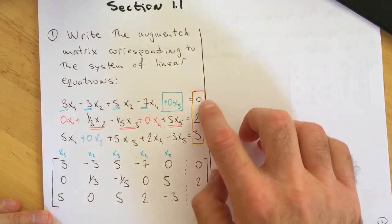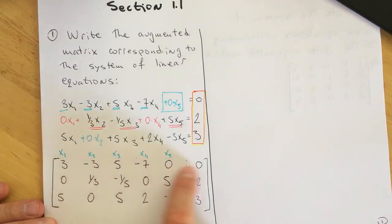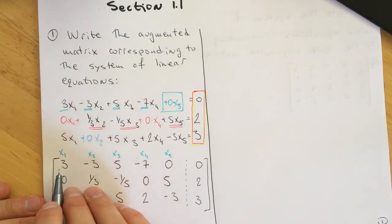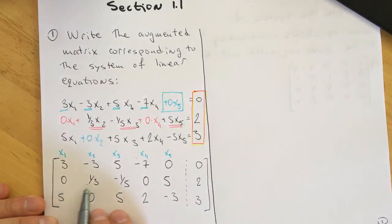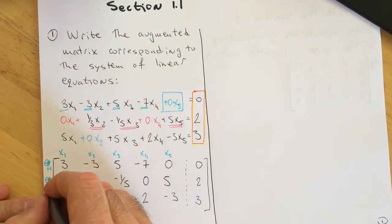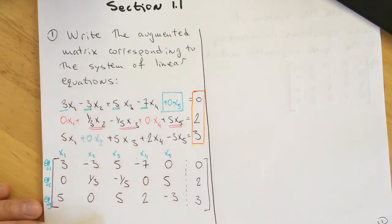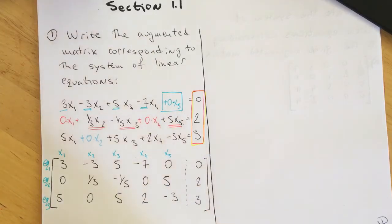The augmented matrix is always augmented by one column of the constants. Then the question is: how many rows? The number of rows corresponds to the number of equations. We completed the first row by writing the coefficients from the first equation, the second row from the second equation, and so on. The number of equations corresponds to the number of rows. It's very simple to write down the augmented matrix given a system of linear equations.